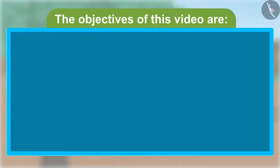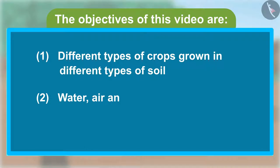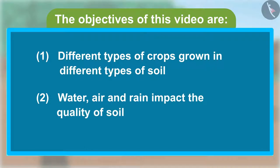The objectives of this video are: one, different types of crops grown in different types of soil; two, how water, air, and rain impact the quality of soil.